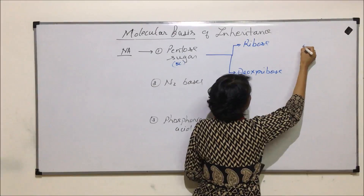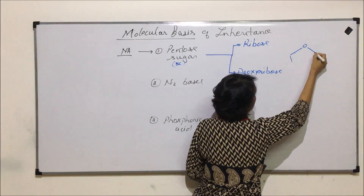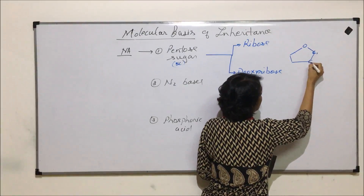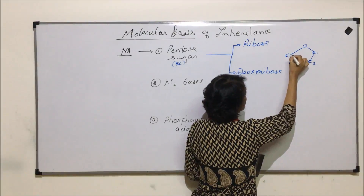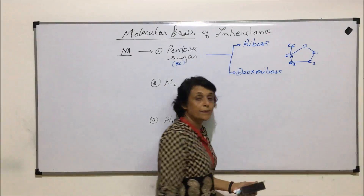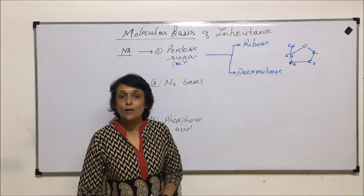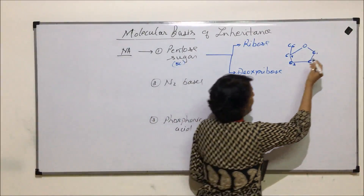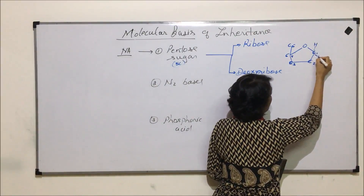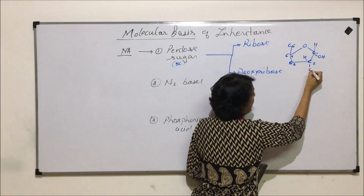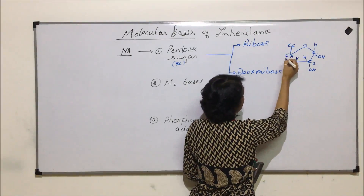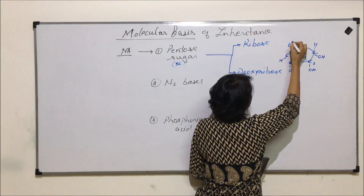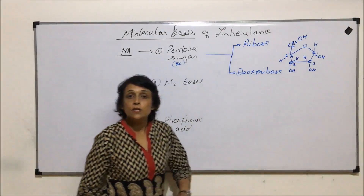Ribose sugar, if we see the structure, it has a pentagonal shape. Let us number these carbons: here is carbon number 1, this is 2, here is 3, this is 4, and the 5th carbon is here. So it is a ring which is made up of 4 carbons and 1 oxygen. We call such a ring a furanose ring, and in this case it has hydrogen and hydroxyl groups at each position. This carbon has CH2OH. So this is ribose sugar.